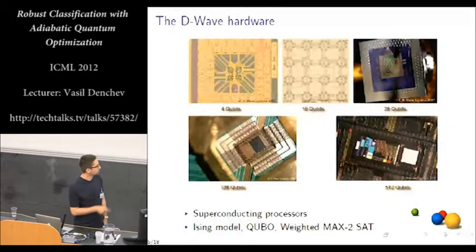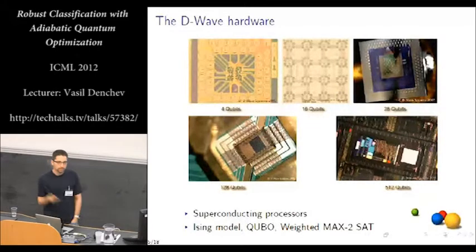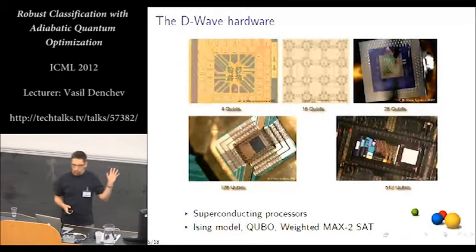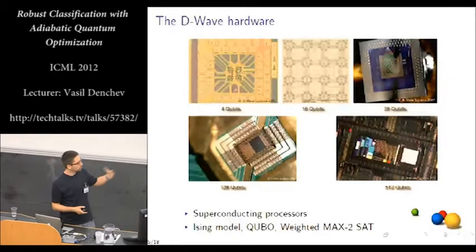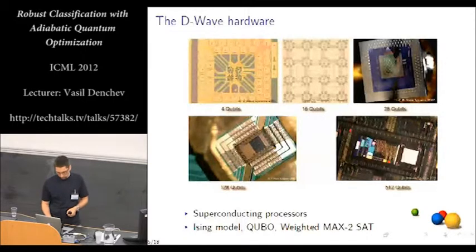They implement in hardware the Ising model, also equivalent to quadratic unconstrained binary optimization, weighted max two SAT, all of these. So whatever we do in machine learning, we have to transform our problems into this form in order to be able to use the quantum hardware.